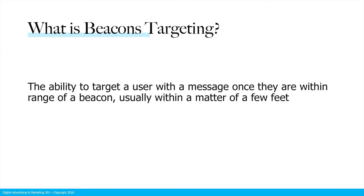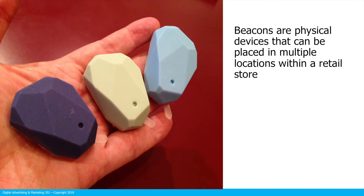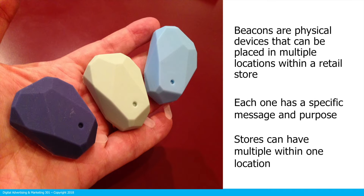So what is beacon targeting? Beacons are the ability to target a user with a message once they are within range of a beacon, usually within a matter of a few feet. A beacon is actually a physical device — they are relatively small, you can hold a few of them within the palm of your hand. A beacon can be placed within a retail store, and each one has a specific message programmed into it and a specific purpose. Stores will generally have multiple within one location.